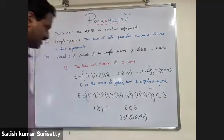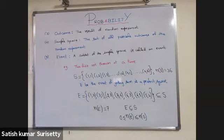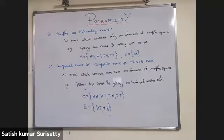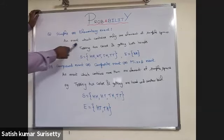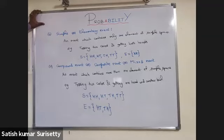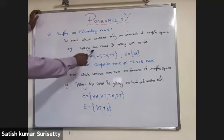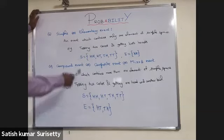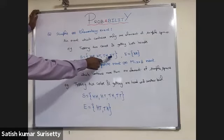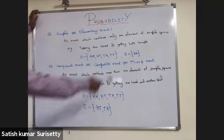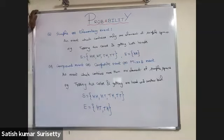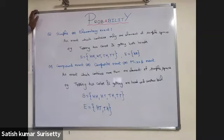E is always a subset of S, and the number of elements in E is greater than or equal to zero and less than or equal to the number of elements in the sample space S. A simple or elementary event is an event which contains only one element of the sample space. For example, tossing two coins and getting both heads — the sample space contains four elements: HH, HT, TH, and TT, and the event E is {HH}, containing only one element.